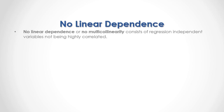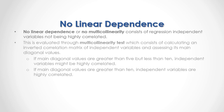No linear dependence, or no multicollinearity, consists of regression independent variables not being highly correlated. This is evaluated through a multicollinearity test, which consists of calculating an impaired correlation matrix of independent variables and assessing its main diagonal values. If main diagonal values are greater than 5 but less than 10, independent variables might be highly correlated. If main diagonal values are greater than 10, independent variables are highly correlated.